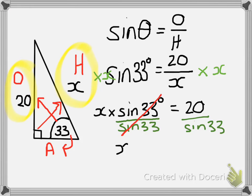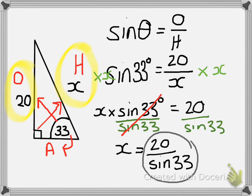We have x equals 20 divided by sin 33. Now, once again, we've got to a stage in our working out where we can put this information on the right hand side straight into our calculator and we'll get an answer. So let's all do that now.